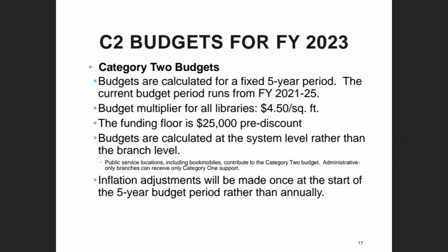When calculating the budget, it is system-wide — if you have multiple branches, each branch is used in the calculation to create one big pot of funding that can be spent anywhere in the library system for any eligible branch. The funding floor for small branches is $25,000. The budget multiplier is $4.50 per square foot — if that calculation is less than $25,000, you get that budget floor. We used to deal with annual inflation adjustments, but now the inflation adjustment will be calculated each time a new budget period starts, so we won't see that adjustment until funding year 2026.